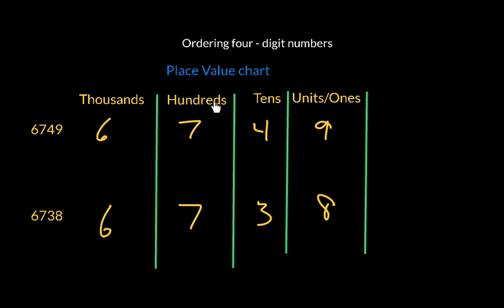So what do we do? We go to the next column over to the tens column and we compare these two digits. Clearly four sets of ten is more than three sets of ten, so that means that 6749 is going to be the larger of the two numbers.